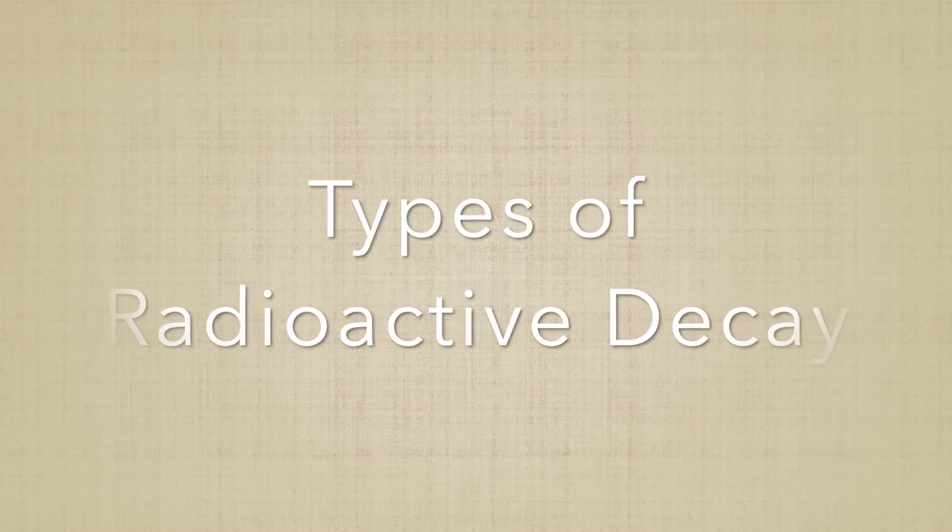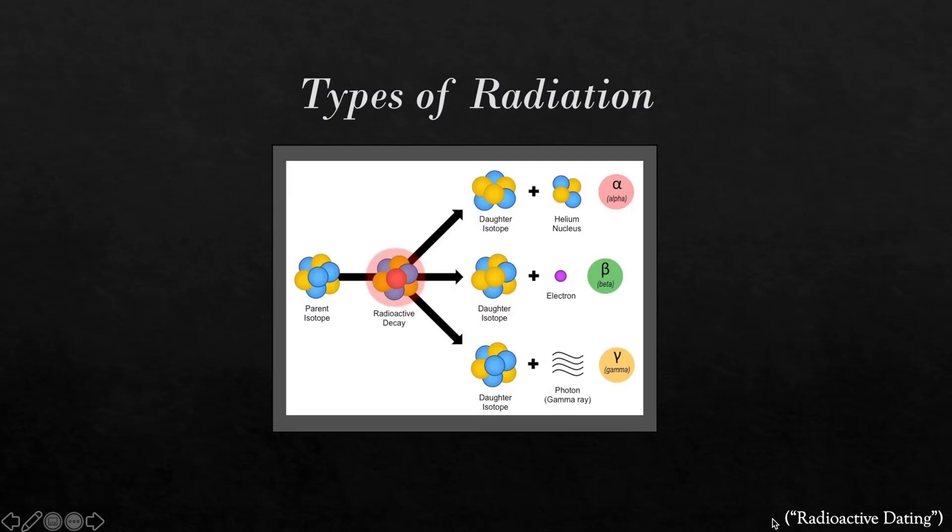Types of radioactive decay. There are several types of radioactive decay. The three that we will be looking at are alpha decay, beta decay, and gamma decay.